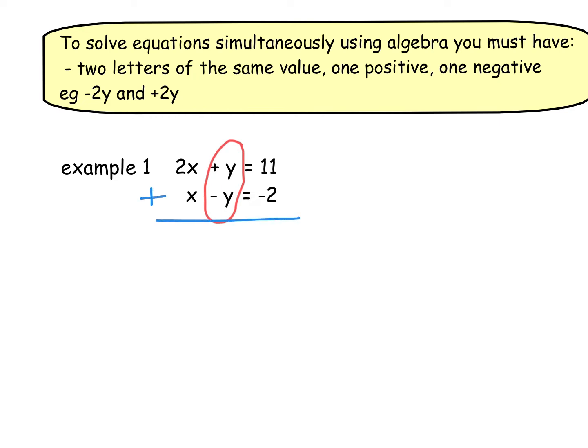Starting from left to right — I know this goes against your normal order — if I add 2x plus x, that gives me 3x. If I do y minus y, then the y's have disappeared — they've been eliminated. Then I do 11 add minus 2, well that's just 11 taking away 2 which is 9. So I've now got the new equation 3x equals 9. We know 9 divided by 3 is 3, so x equals 3 — I've got my first value.